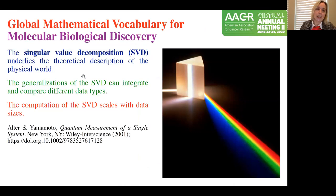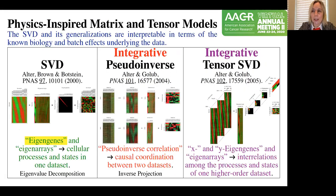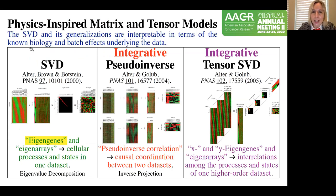The singular value decomposition underlies the theoretical description of the physical world. For example, the physical activity of this prism that takes white light and separates it into its color components is mathematically described by the SVD. In using the SVD on large-scale molecular biological data, we showed that it is able to find patterns in the data that are interpretable in terms of the known biology and the batch effects that underlie the data.